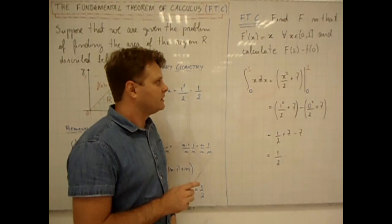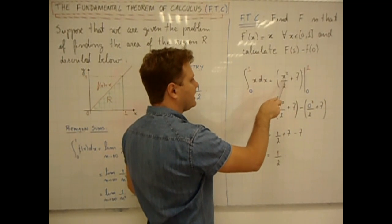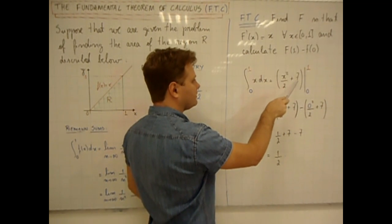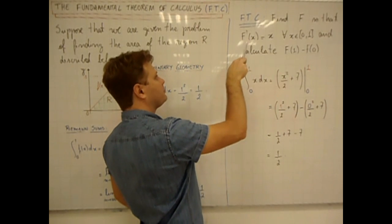It is not difficult to see that the function I put here, x squared divided by 2 plus 7, satisfies this property.